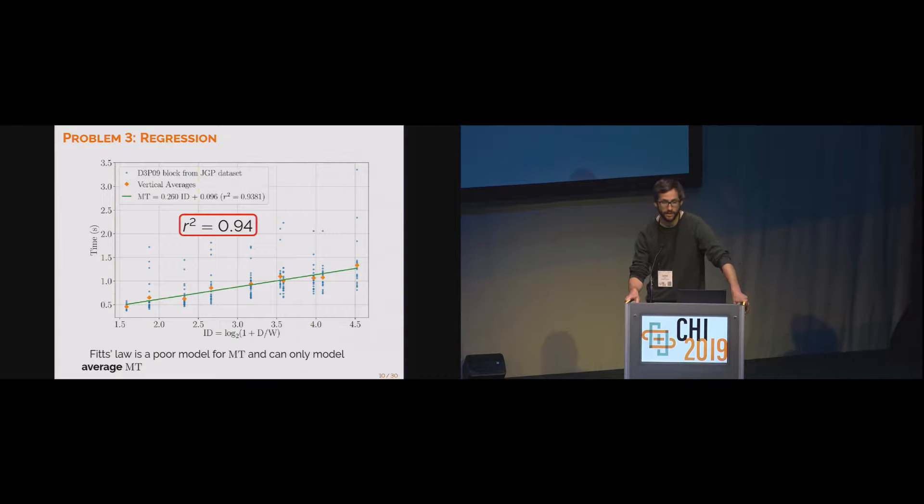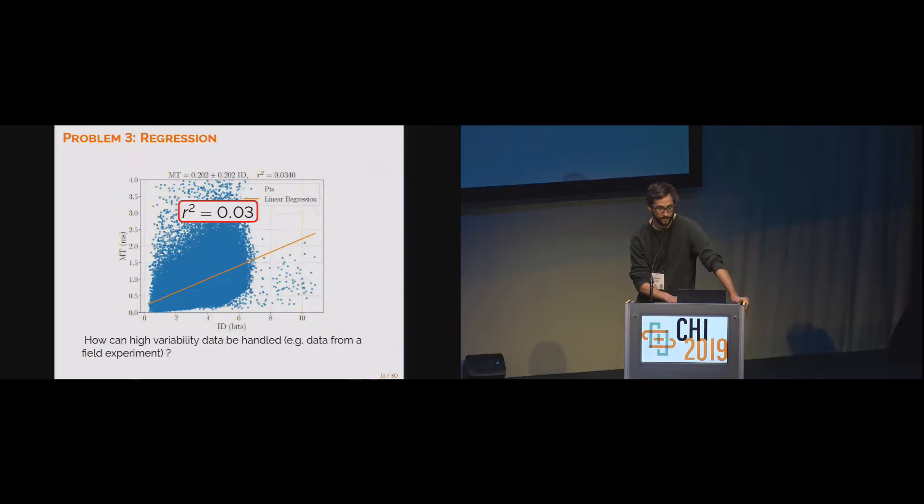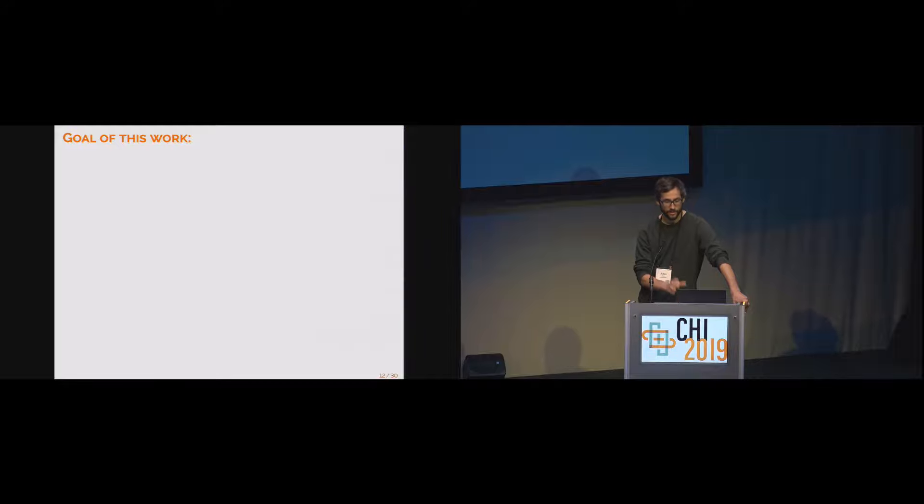What we actually do in HCI usually is we consider the average movement time per condition. The blue scatter plot is the same as previously, except here I've represented orange diamonds, which are the average movement time per condition. Then these align quite nicely, and if you compute the best straight line through this, you find typical values of R squared that you find in HCI. Some of you will tell me that this is normal, we're just reducing the noise that we have in the data by averaging the measures. But the question is, what do you do with data like this from a field study with very high variability? The goal of this work is to provide a theoretical framework for the speed-accuracy trade-off that's simple but rigorous, and not completely driven by empirical considerations.